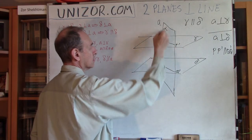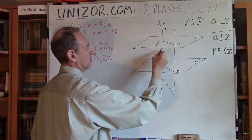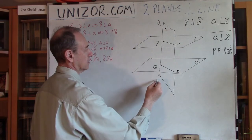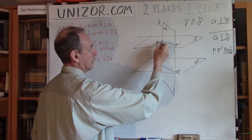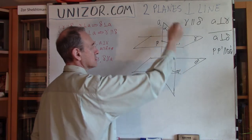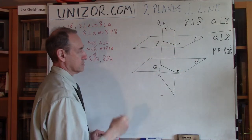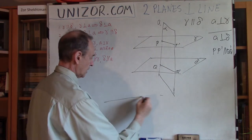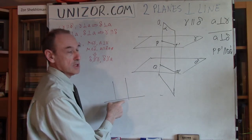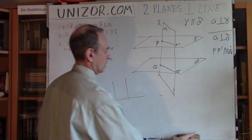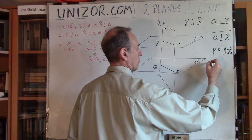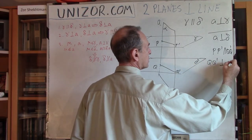But PP prime is perpendicular to line A, because A is perpendicular to the entire plane gamma. Now, within plane alpha, if you have a line A, and PP prime is perpendicular to it, and QQ prime is parallel to PP prime, then by plane geometry QQ prime is also perpendicular to line A.